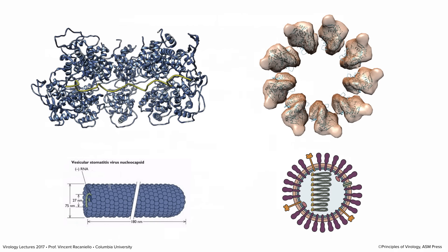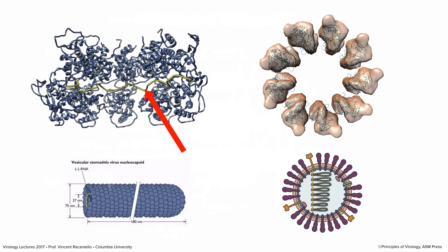The negative-stranded RNA viruses have RNA always complexed with proteins, typically a nucleoprotein. We talked about that for vesicular stomatitis virus. Here at the bottom is a schematic of the bullet-shaped nucleocapsid — a single nucleocapsid protein shown in blue binding to the RNA shown in green. The RNA is coiled up and capsid protein wraps around it; the nucleocapsid proteins interact with each other and with the RNA to form a helical structure. On the top is a crystal structure showing the nucleocapsid protein in blue with two main lobes and an RNA-binding groove in the middle.